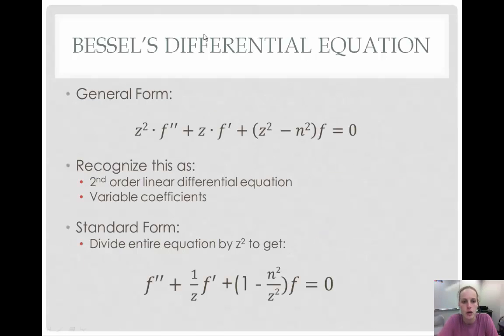The general form of Bessel's differential equation is z squared times f double prime plus z times f prime plus the quantity of z squared minus n squared times f equals zero. We can recognize this as a second-order linear differential equation with variable coefficients.